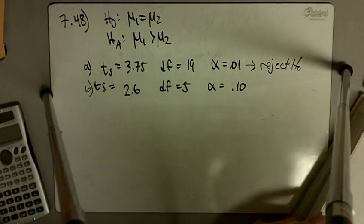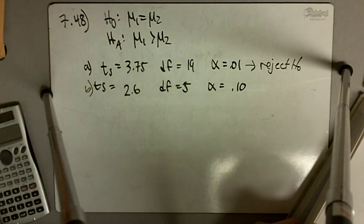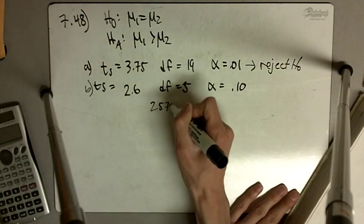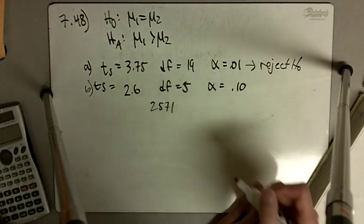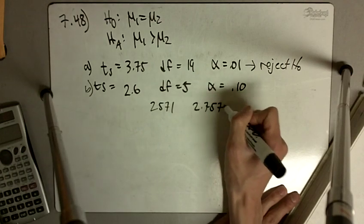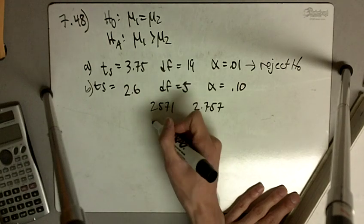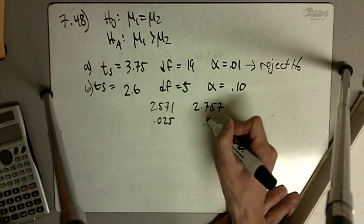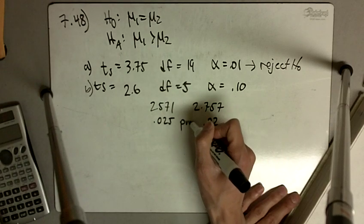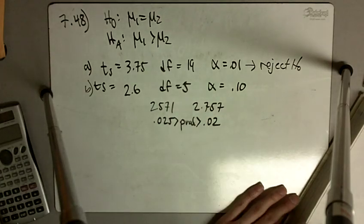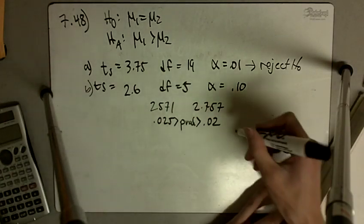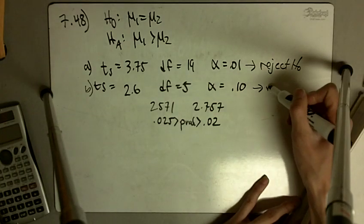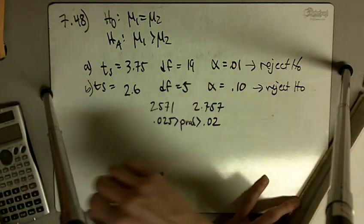So looking up 5 degrees of freedom and looking up the number 2.6, 2.6 is in between 2.571 and 2.757. 2.571 is 0.025 upper tail probability, and this is 0.02 upper tail probability. So our p-value, we're not doubling anything because this is just a one-sided test. Our p-value is less than our alpha. Both of these p-values are less than alpha, so we reject the null hypothesis.